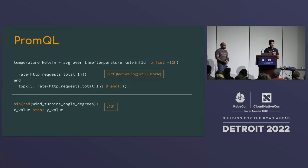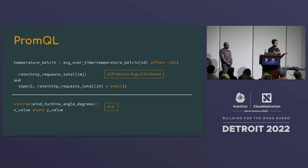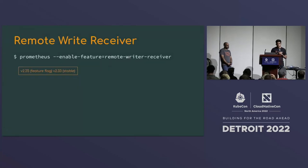We also added trigonometric functions in Prometheus and an arc tangent operator. For example, if an angle is in degrees, you convert it to radians using the radian function and then take the sine of it.